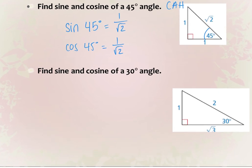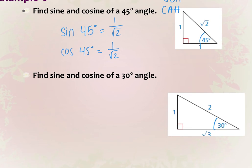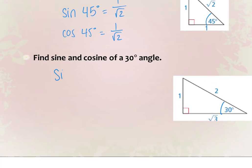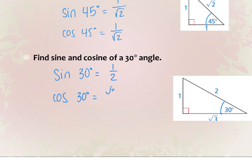Now find the sine and cosine of a 30-degree angle. The sine of 30 is 1 over 2 — that's where we get 0.5. When we plugged sine of 30 into the calculator we got 0.5 because it's the ratio 1 over 2. The cosine of 30 degrees is square root of 3 over 2.